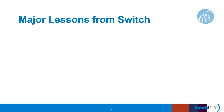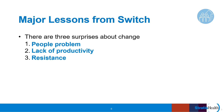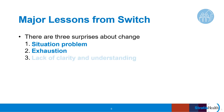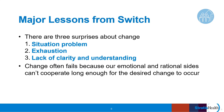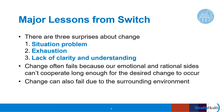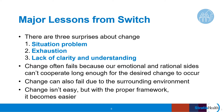Here are a few major lessons from the book Switch. There are three surprises about change: what looks like a people problem is often a situation problem; what looks like a lack of productivity is often exhaustion; and what looks like resistance is often a lack of clarity and understanding. Change often fails because our emotional side and our rational side can't cooperate long enough for the desired change to take effect. Another reason change often fails is because of our surrounding environment — the situation we are in or the path we are on that impacts our behaviors. Finally, change isn't easy, but with the right framework, it becomes easier.